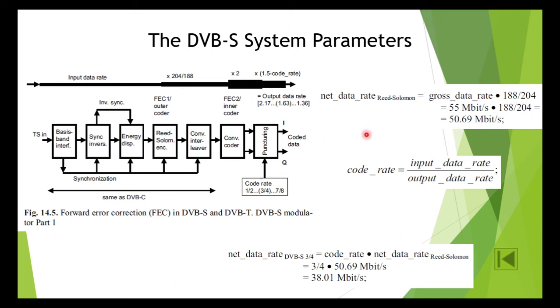The Reed Solomon forward error correction reduces the data rate. Net data rate: gross data rate is 55 megabits per second. Now if you are using 188 by 204, that many bits will be taken out, that is 50.69 megabits per second.